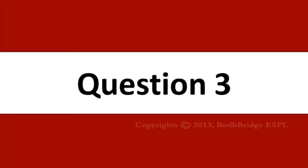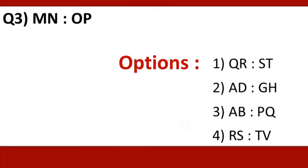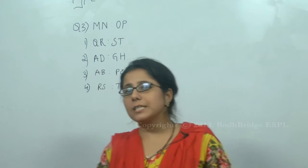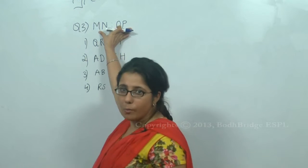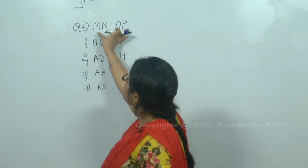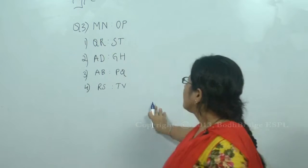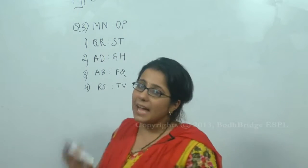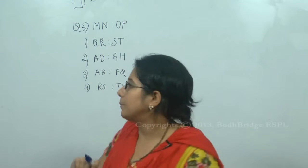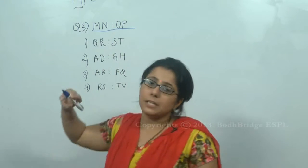Question three — this is a question asked in exams. The question is MN : OP, and the options are: option one QR : ST, option two AD : GH, option three AB : PQ, option four RS : TV. We have to see what kind of relationship the two pairs bear with each other, find a similar relationship from the given alternatives, and that will be our answer.